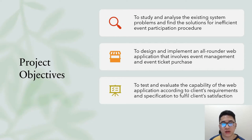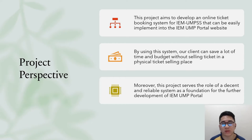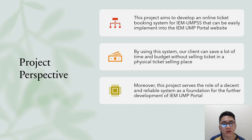The project objectives are to study and analyze existing system problems and find solutions for the inefficient event participation procedure; to design and implement an all-rounded web application involving event management and event ticket purchases; and to test and evaluate the capability of the web application according to client requirements and specifications to fulfill client satisfaction. This project aims to develop an online ticket booking system for IEM-UNPSS that can be easily implemented into the IEM-UMP portal website, saving time and budget without physical ticket selling, and serving as a foundation for further development of the IEM-UMP portal.